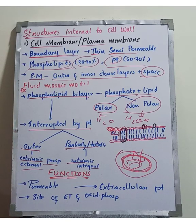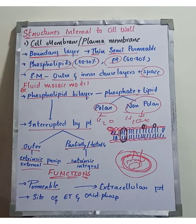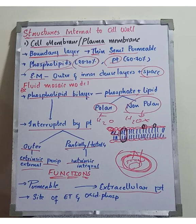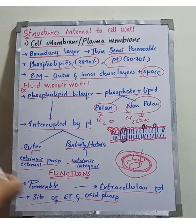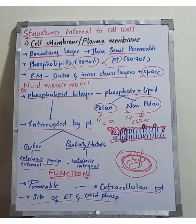This is the fluid mosaic model of the cell membrane. The cell membrane is semi-permeable and allows only certain types of ions. It also releases external proteins, which can include toxins. It is also involved in electron transport and oxidative phosphorylation. These are the reactions done by the plasma membrane.